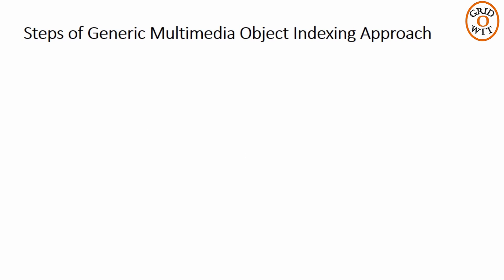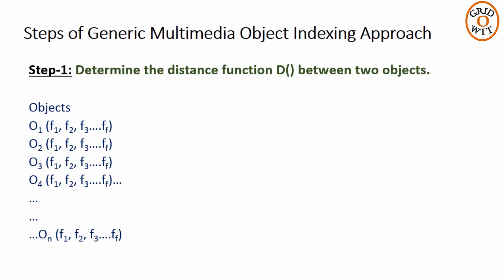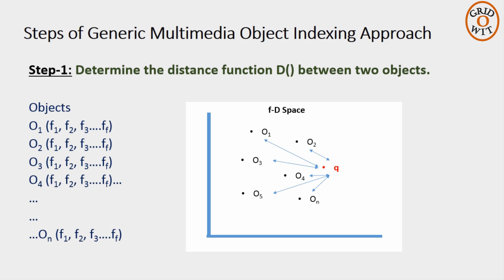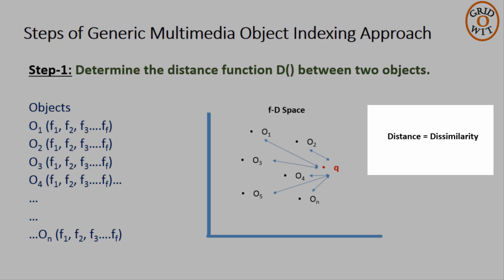There are four steps of Generic Multimedia Object Indexing Approach. First step: determine the distance function D between two objects. If each object has f number of features, then each object can be represented as a point in f-dimensional space. The query object is also represented as a point in this f-dimensional space.